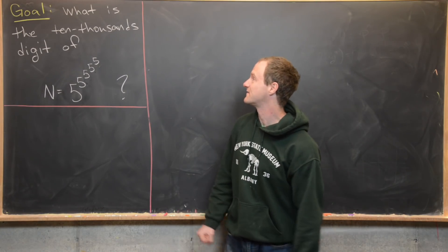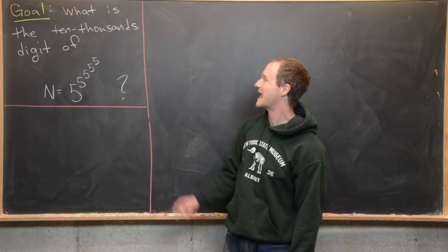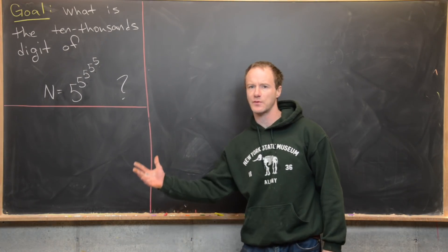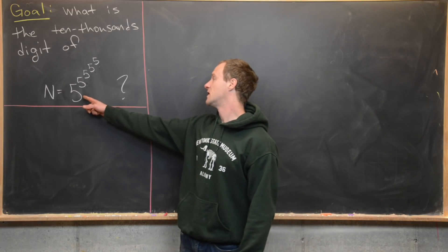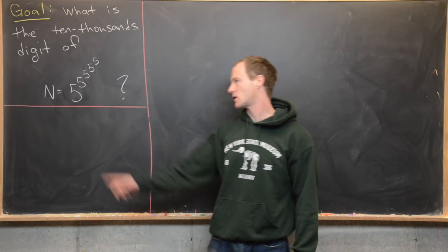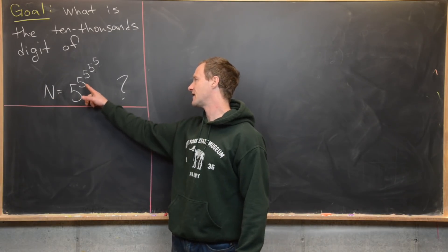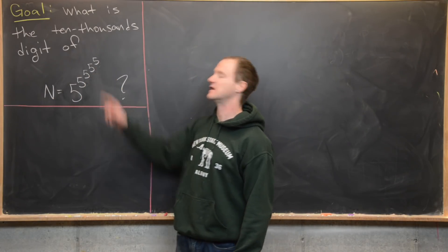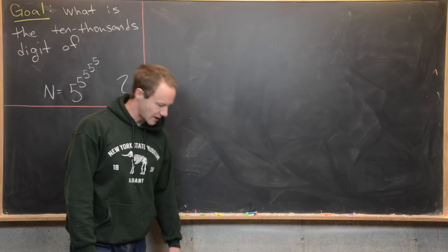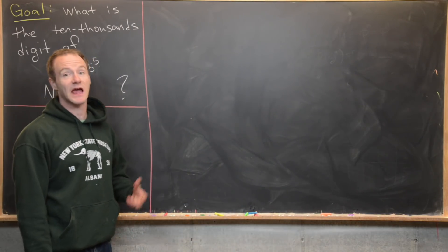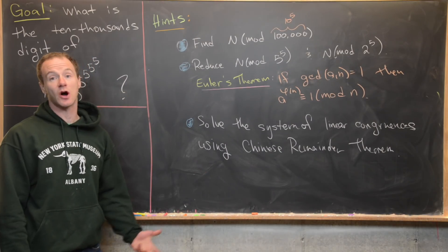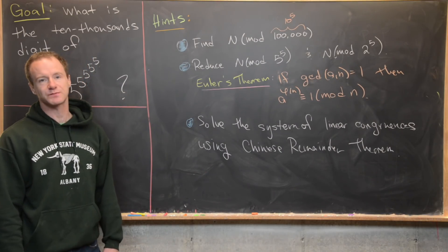Our goal is to find the 10,000s digit — that's the fifth digit from the right — of this power tower of fives. I've called it N, and it's five to the five to the five to the five to the five. Maybe give this problem a go; I'll come back with some hints and then a solution. Here are my hints, or maybe we could call it an outline for the solution.